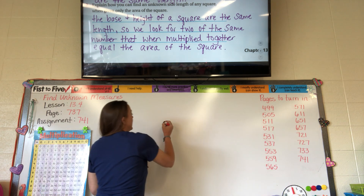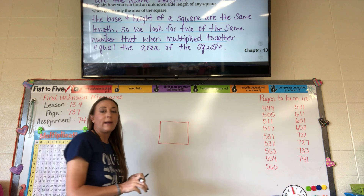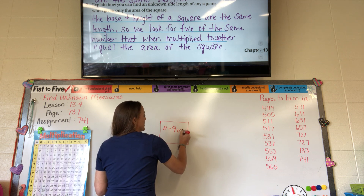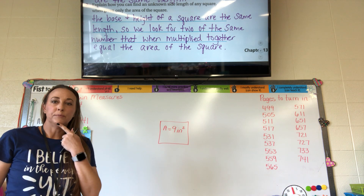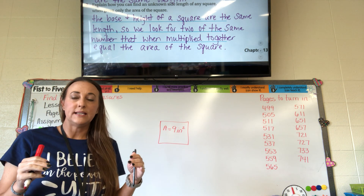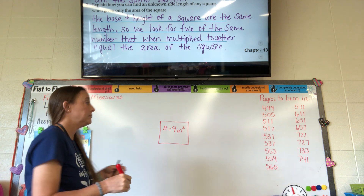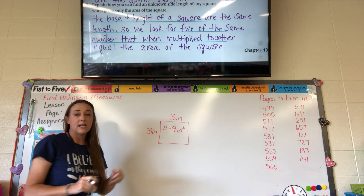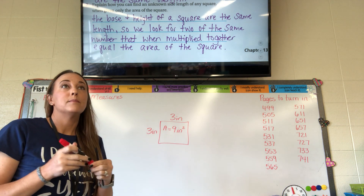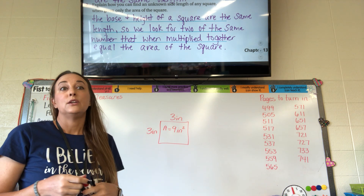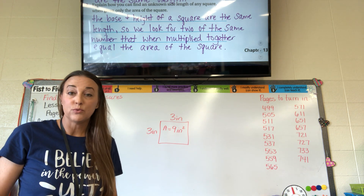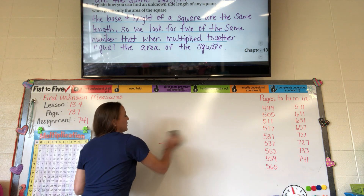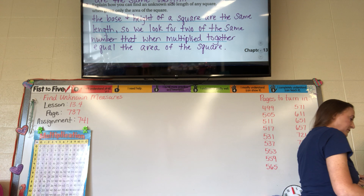For example, if the area of a square is 9 square inches, ask yourself: what two same numbers multiply to equal 9? That would be 3, because 3 times 3 equals 9. It would be the same for 36 — 6 times 6; 5 times 5 equals 25; 8 times 8 equals 64; 7 times 7 equals 49. So you're looking for two of the same number when you have a square.